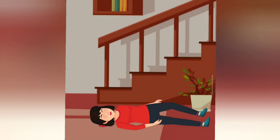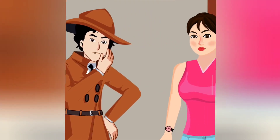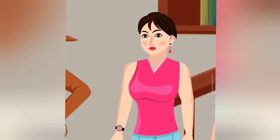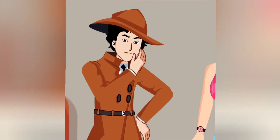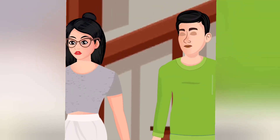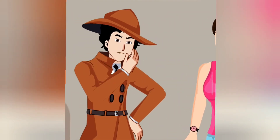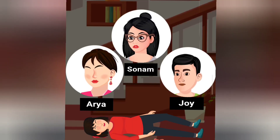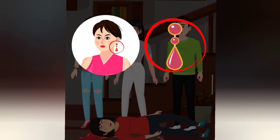Someone attacked Kim on the head from behind and killed her. Detective Mehul arrived at the crime scene and interrogated everyone, but everyone claimed to be innocent. Can you guess who is the murderer? Aria, Sonam, or John? Aria is wearing the same item that can be seen near the dead body. She is the murderer.